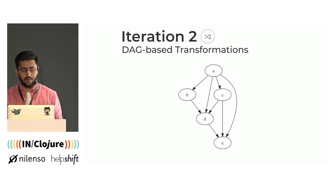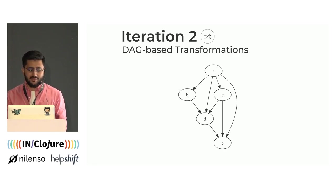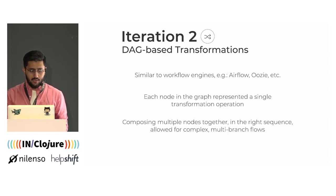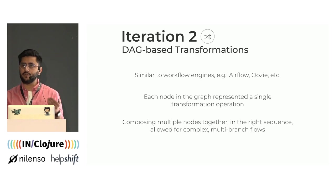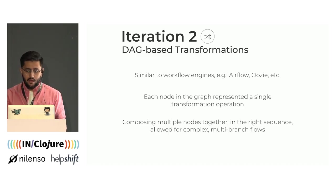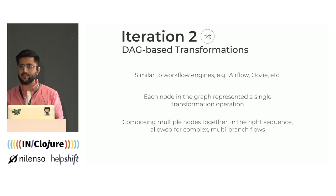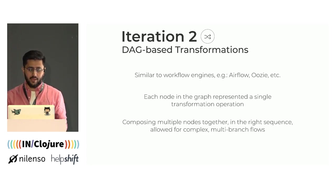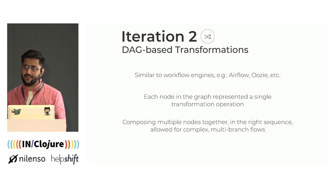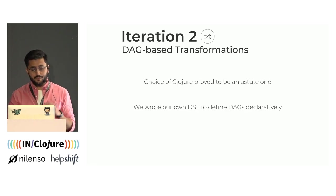So to overcome some of these issues, we moved to representing the transformations as directed acyclic graphs, or DAGs for short. These are graphs where the nodes are connected by directed edges that never form a closed loop or cycle. Such a representation is similar to how certain workflow engines like Airflow operate and is also pretty typical of ETL solutions. In such a DAG, each node represents a single transformation operation, and the edges represent how data flows from one node into another. Composing multiple such nodes together in the right sequence allows us to express complex transformations in a much more standardized, declarative form.